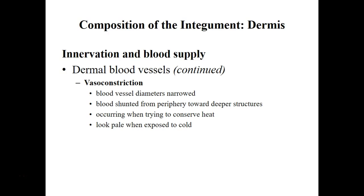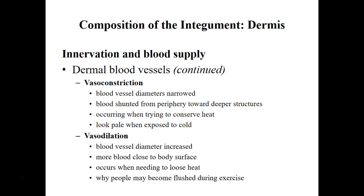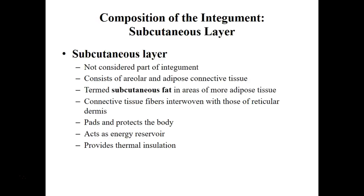The blood supply also controls temperature to some extent. If our body gets too hot or too cold, blood vessels in the integument will either vasodilate or vasoconstrict. Vasoconstriction occurs when temperature gets too cold and keeps blood from flowing to the surface of the skin. Vasodilation occurs when our body temperature gets too warm and allows blood to flow to the surface of the skin. Both maintain body temperature in homeostasis and both work under negative feedback.